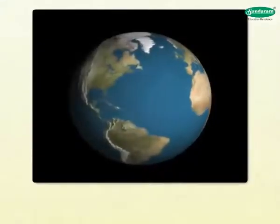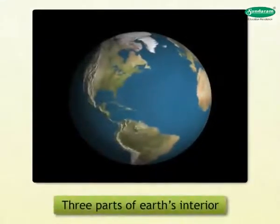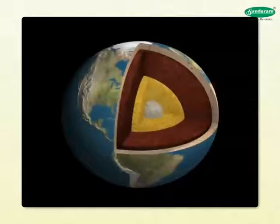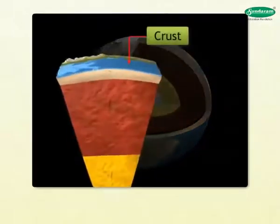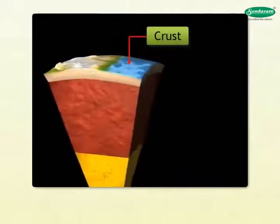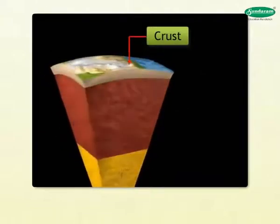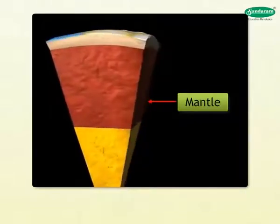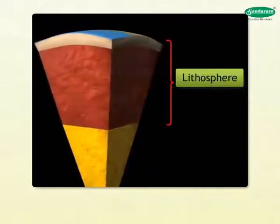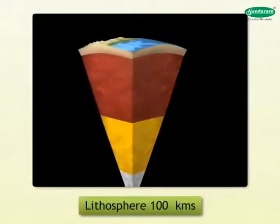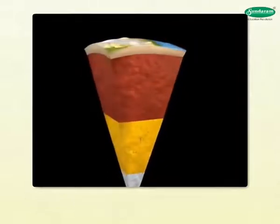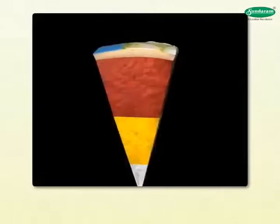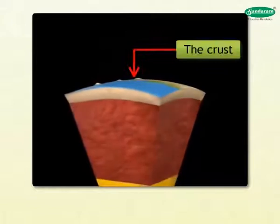We can divide the Earth's interior into three parts: one, the crust; two, the mantle; three, the core. The crust is the outermost layer of Earth, made up of solid rocks. Below the crust is the mantle. The crust and a portion of the mantle adjacent to it are together called the lithosphere, which is about 100 kilometers thick. The division below the mantle is called the core.